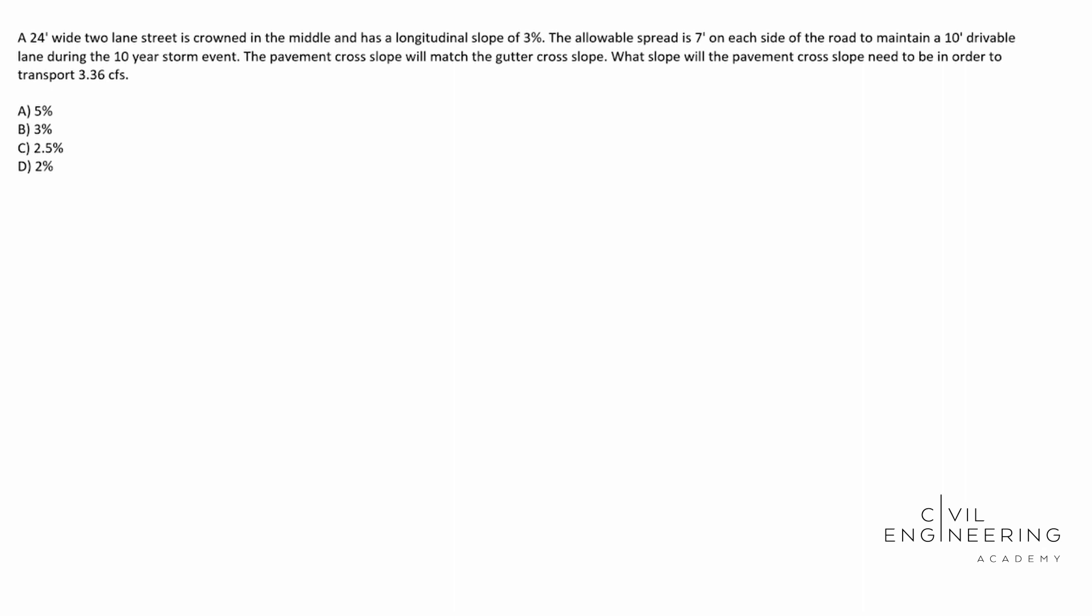A 24 foot wide two lane street is crowned in the middle and has a longitudinal slope of 3%. The allowable spread is seven feet on each side of the road to maintain a 10 foot drivable lane during the 10 year storm event. The pavement cross slope will match the gutter cross slope. What slope will the pavement cross slope need to be in order to transport 3.36 cubic feet per second?